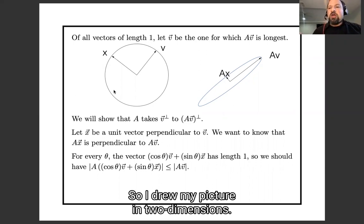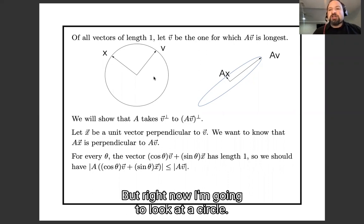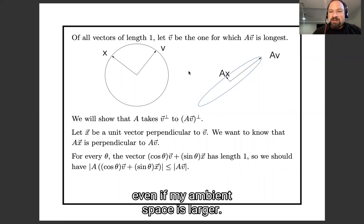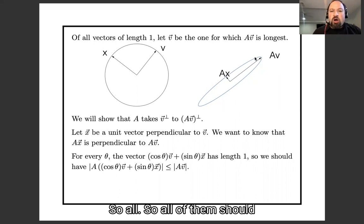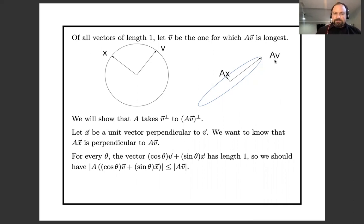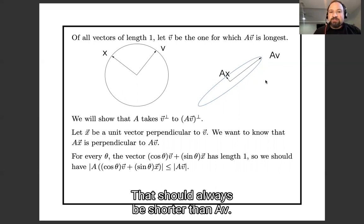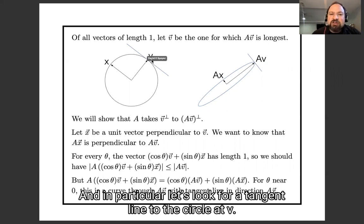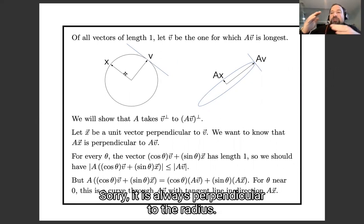I drew my picture in two dimensions, but this argument might take place in more dimensions — maybe a sphere instead of a circle. I'm going to look at the circle cos(θ)V + sin(θ)X, which is a circle in a two-dimensional plane even if the ambient space is larger, and every vector on this circle is a unit vector. So all of them should get mapped to vectors which are shorter than AV. For every θ, A times (cos(θ)V + sin(θ)X) should always be shorter than AV. Let's look at what happens near V — specifically the tangent line to the circle at V. This tangent line is parallel to X, because the tangent to a circle is always perpendicular to the radius.